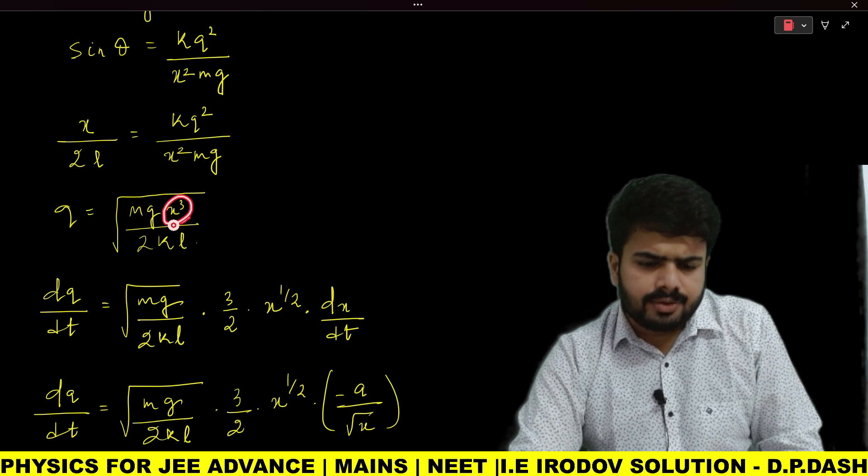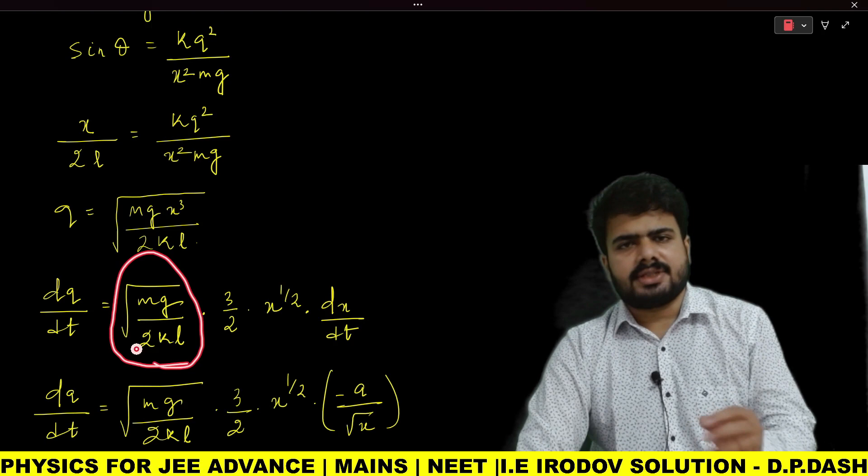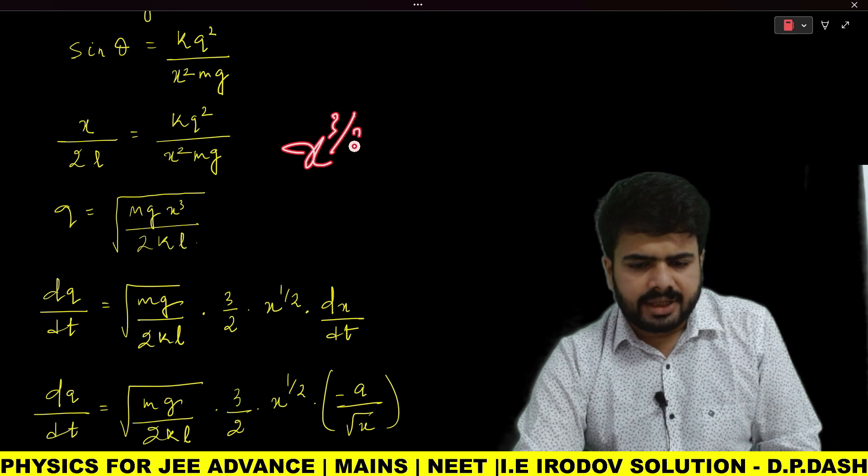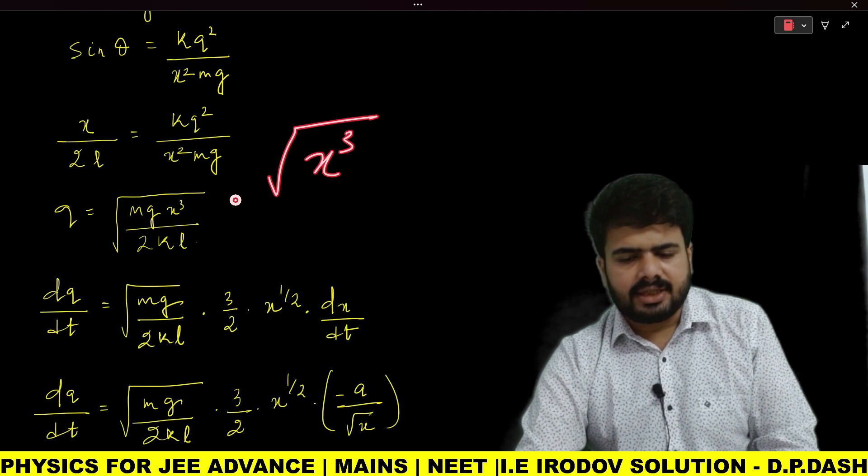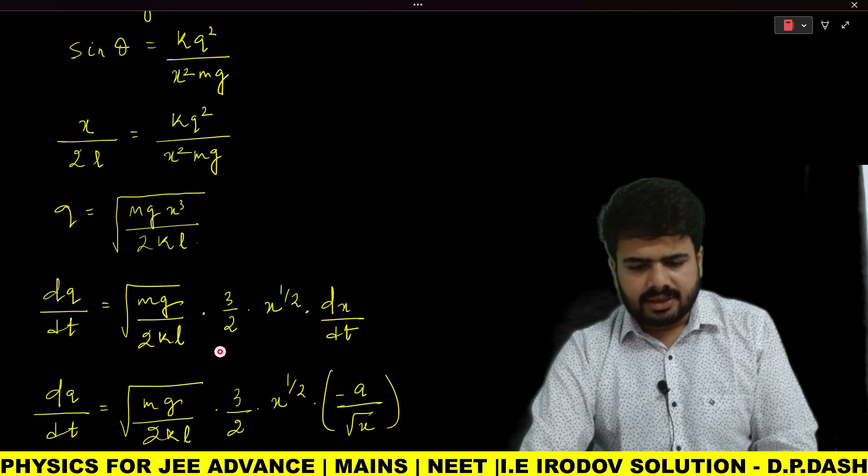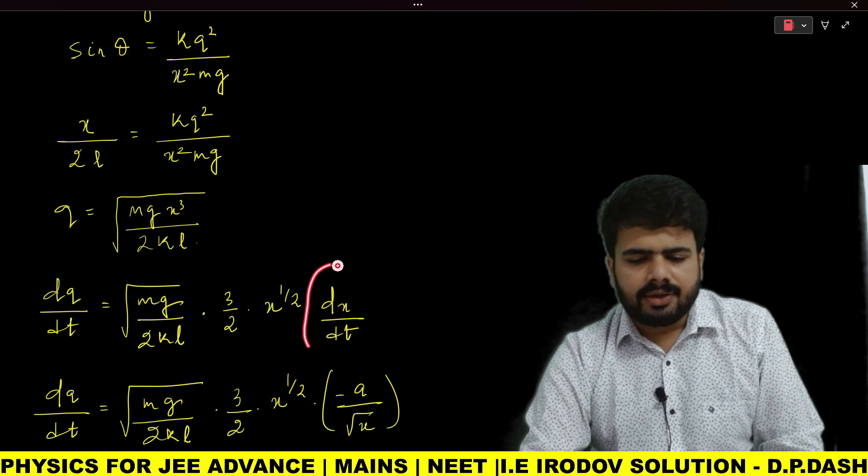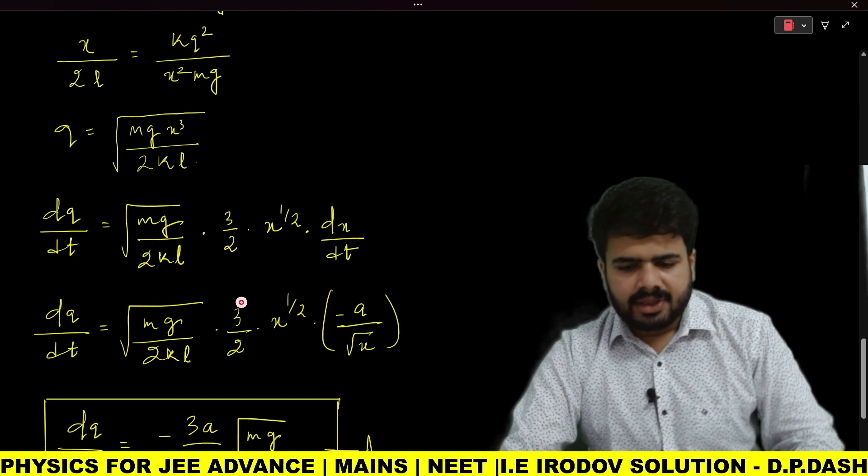Here, except x^(3/2), all are constants, which I have taken outside. The differentiation of x^(3/2) is (3/2)x^(1/2), and applying the chain rule, we get dx/dt.